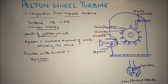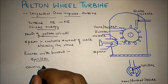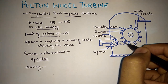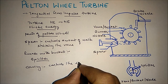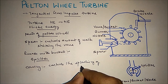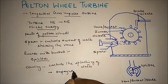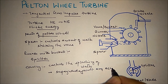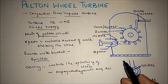The next one is casing. The casing prevents the splashing of water after the water strikes. It basically controls the splashing of water. A second reason why casing is put is as a safeguard against any accidents — to protect the surroundings of the Pelton wheel turbine.